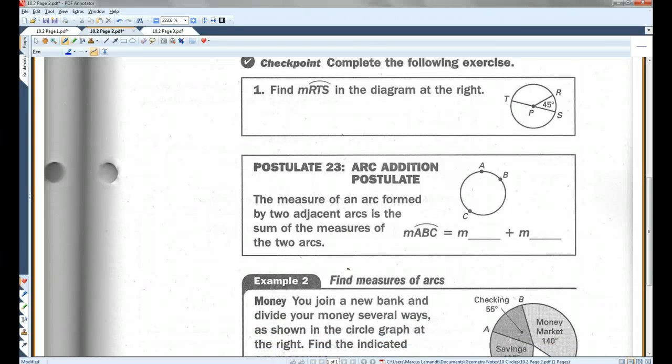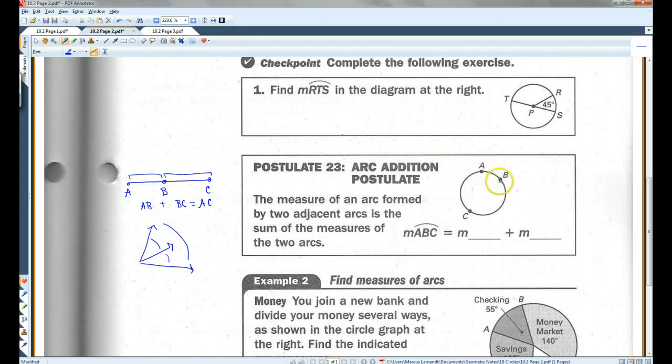Postulate 23, arc addition postulate. This is kind of like the segment addition postulate. When we discuss that, if you have a segment like this, then AB plus BC equals AC. You can basically add this plus this and get the whole thing. Or, we said, this plus this equals the whole thing. Same thing with arc addition postulates. Arc ABC equals arc AB plus arc BC.